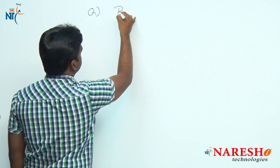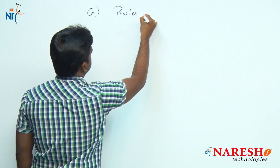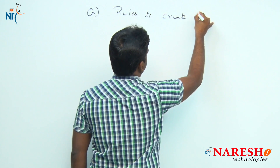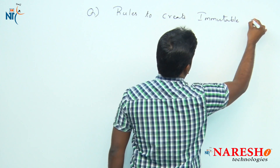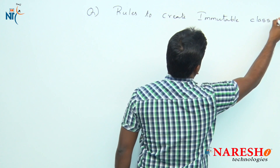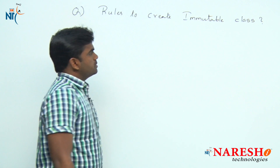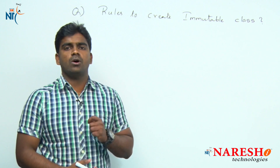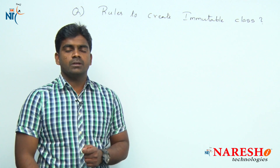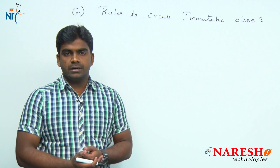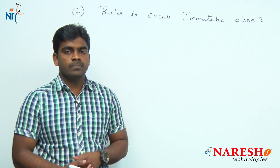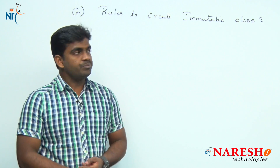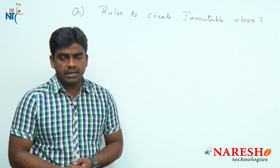So first of all, what is immutable? Immutable means once the object has been created, the object state cannot be modified. That is nothing but an immutable object. Now we are defining the rules to create an immutable class.